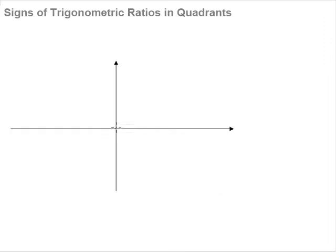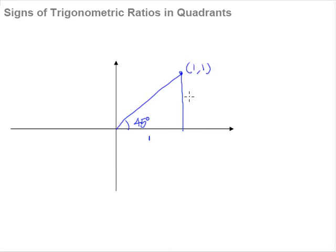Let us say that we have an acute angle of 45 degrees. This point here will have to be (1, 1) because it must be the diagonal of a square. That gives us a length of 1 and a height of 1 for the right-angle triangle. And of course, this length here is square root 2 because of the Pythagorean theorem.